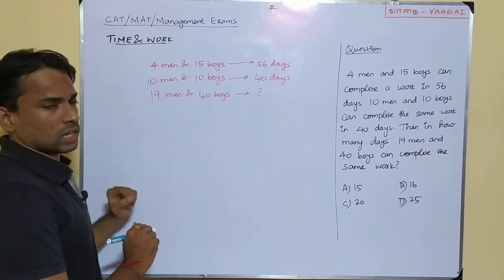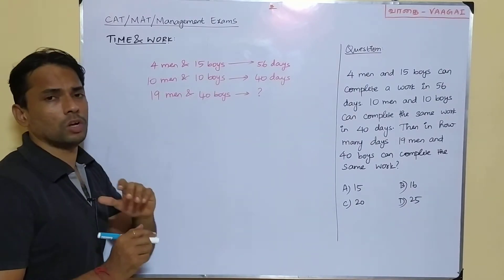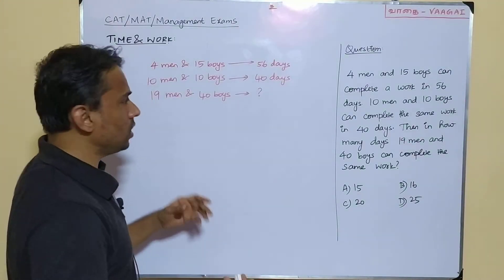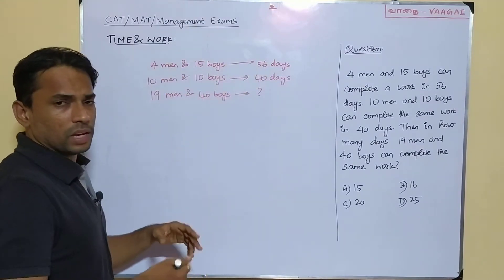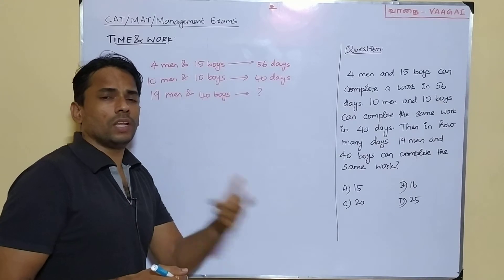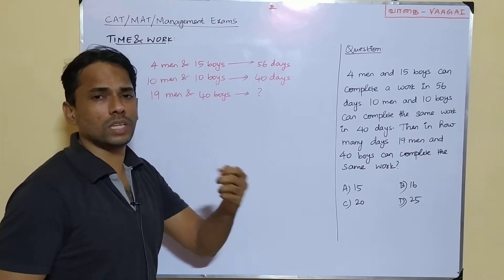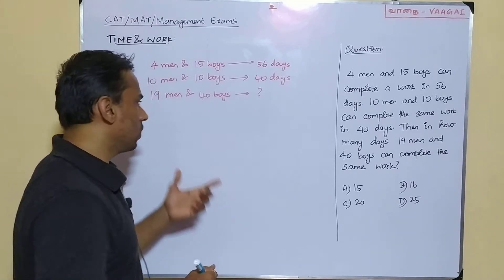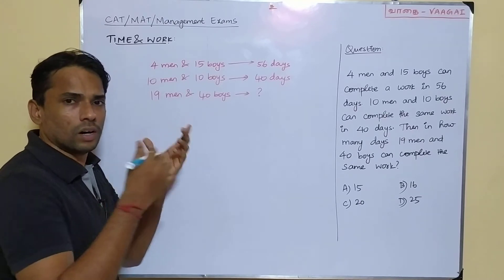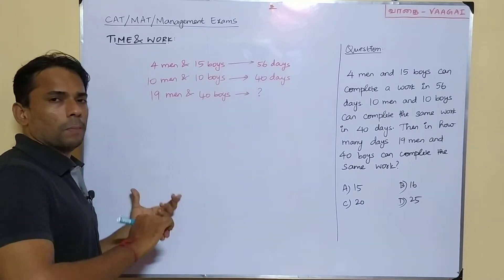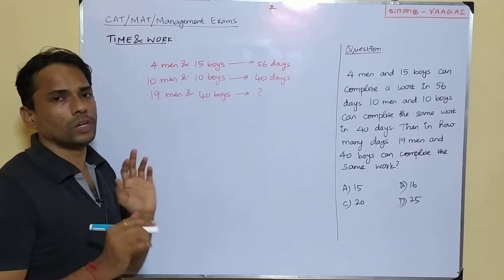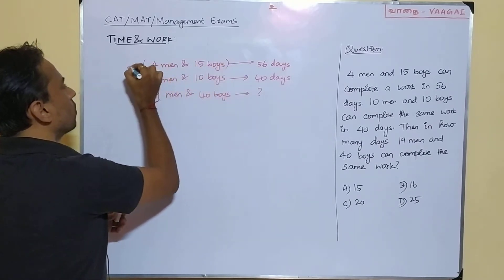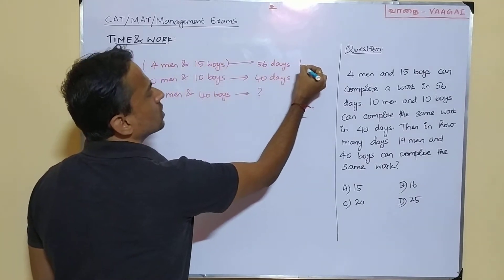We have two pieces of information given and one question asked. The work is constant, so manpower and time are inversely proportional. We use the men-days concept: M1×T1 = M2×T2. Here, the first team (4 men and 15 boys) is M1 with T1 = 56 days, and the second team (10 men and 10 boys) is M2 with T2 = 40 days.